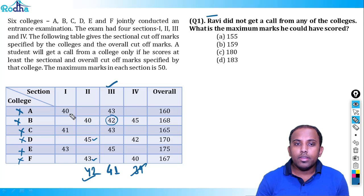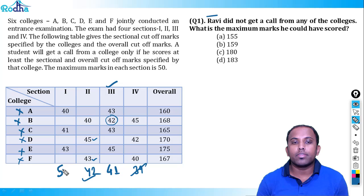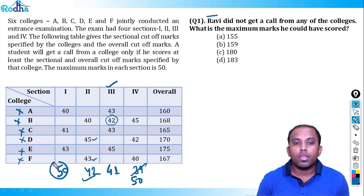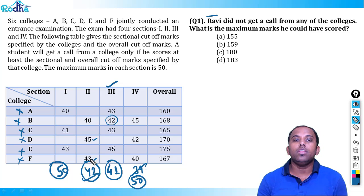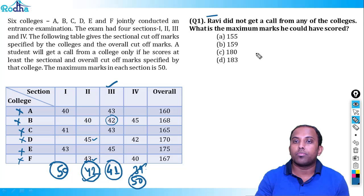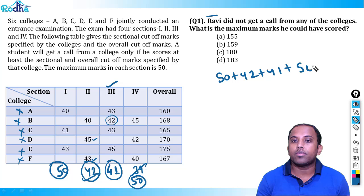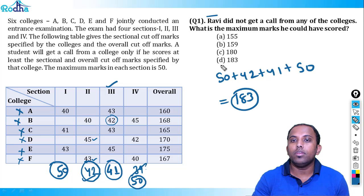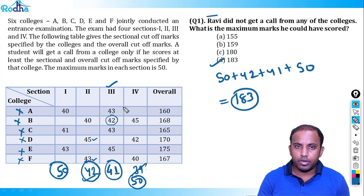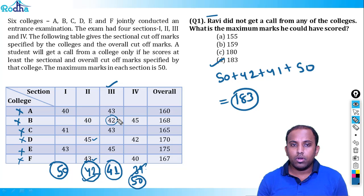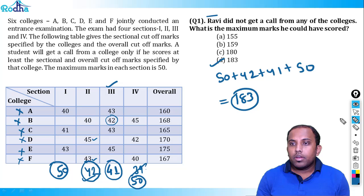To maximize marks, set section 1 to 50, section 2 to 42, section 3 to 41, and section 4 to 50. Total: 50 + 42 + 41 + 50 = 183. He gets no college calls with these marks. The answer is 183, option D. Section 3 has the maximum data, so starting there is the key insight.